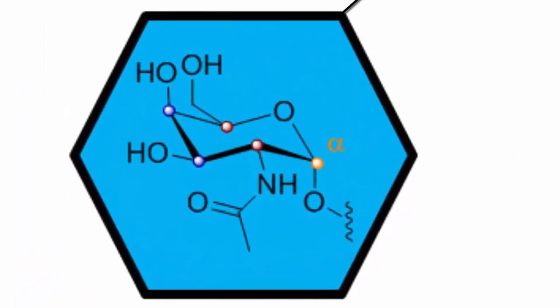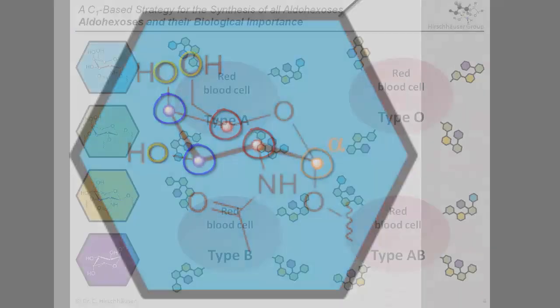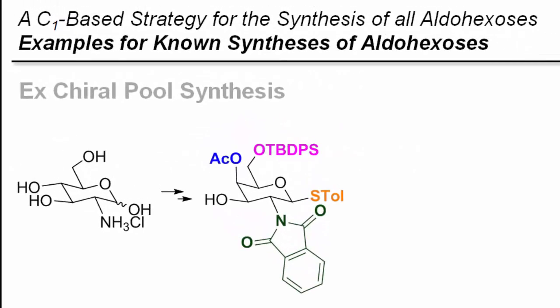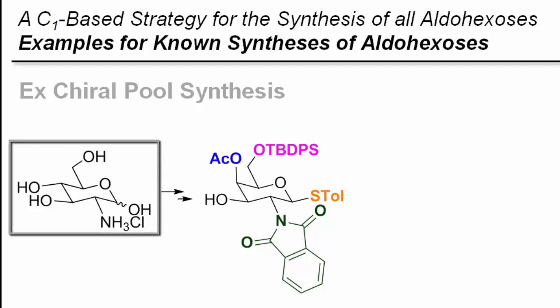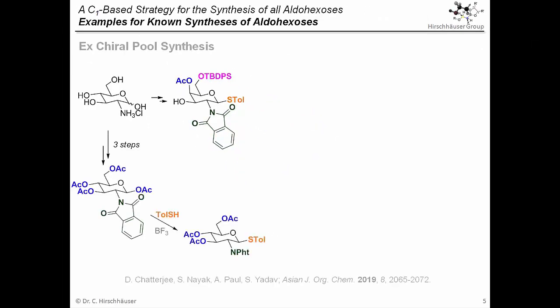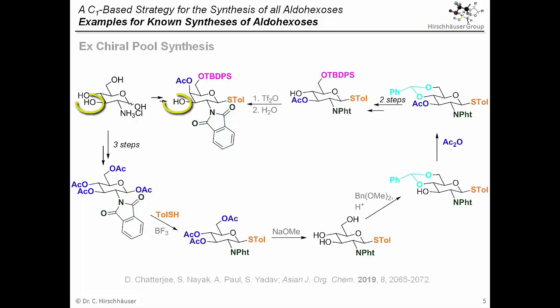And that monosaccharide has to have the correct configuration and only one unprotected hydroxyl group. Classically, the synthesis of such underlying monosaccharides relies on ex-chiral pool strategies — that means you start with a cheaply available sugar derivative and then start modifying it. But as can be seen in this very nice example from 2019, isolating one particular hydroxyl group can require quite a bit of synthetic effort. And this is just one solution for one particular carbohydrate, and thus one particular problem.